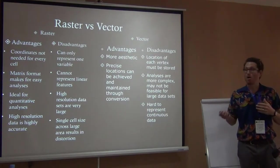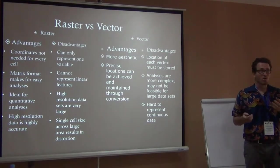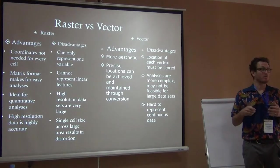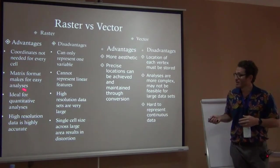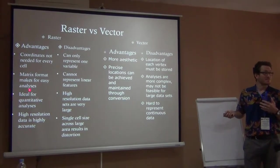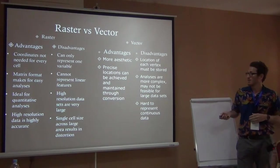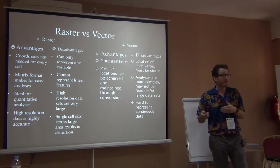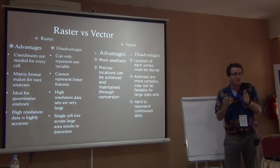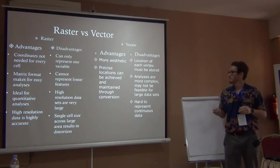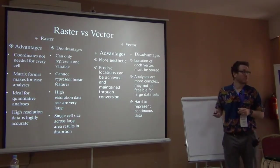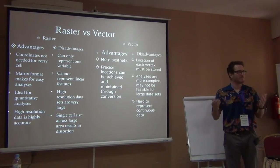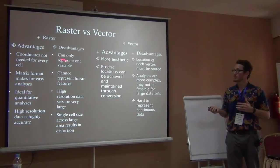This is why global data sets are often stored in raster — you don't need to store a coordinate for every 42 million data points, which would be too hard to store on your computer. It's really easier to compute different statistics because it's in a nice grid, good for quantitative analyses, and high-resolution data can be very accurate — within maybe 30 meters. Raster can usually only represent one variable, although you can have multiple rasters stacked on top of each other representing different variables.